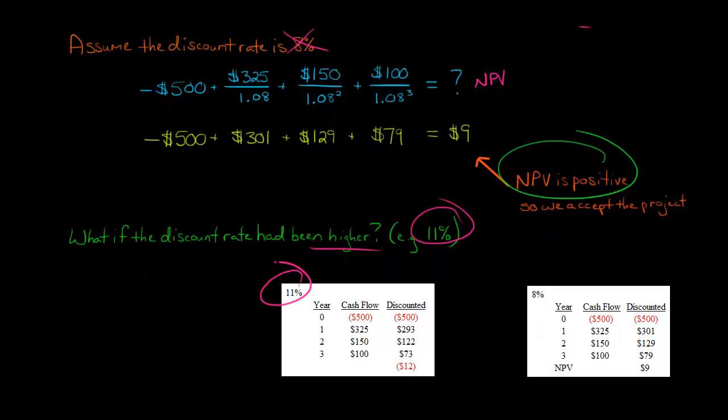When we do 11%, we see that we have the discounted cash flows of each year. When we do that and we sum up the discounted cash flows, we get an NPV of negative $12. Here's with 8%, which we already did, we have the NPV of $9, but it goes from $9 to negative 12 when we go from a discount rate of 8% up to 11%.